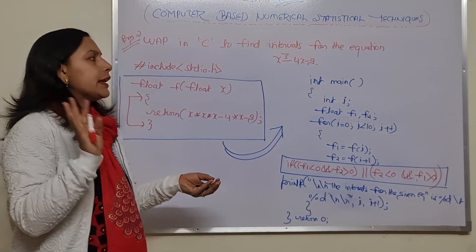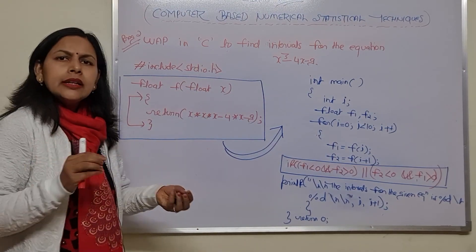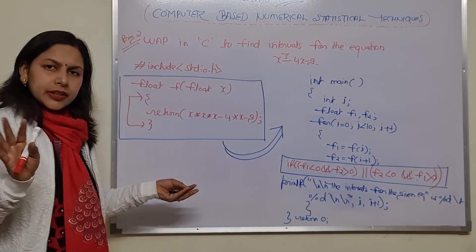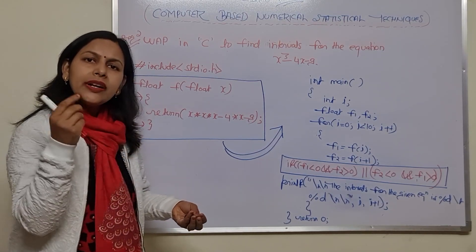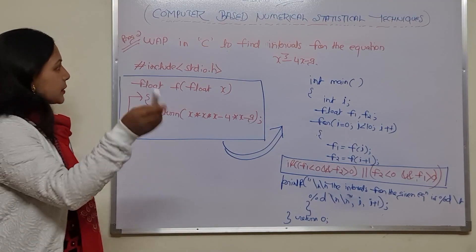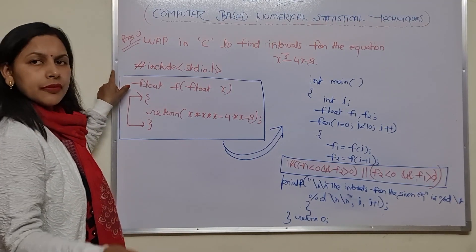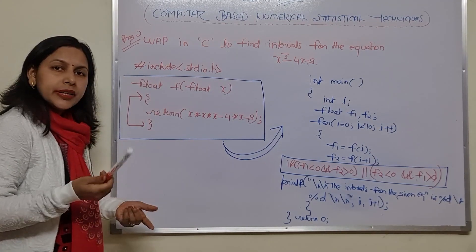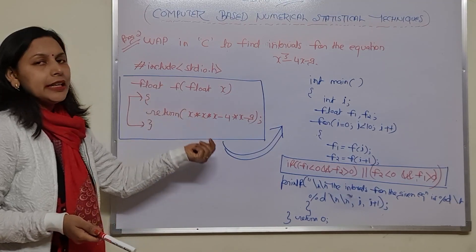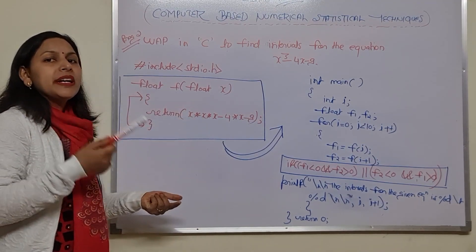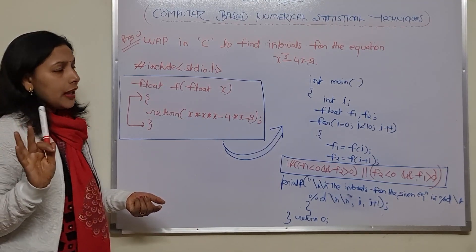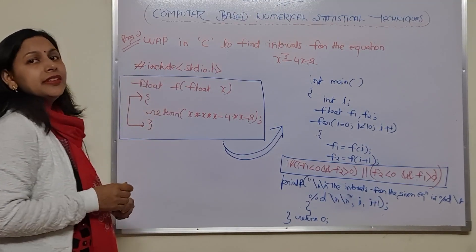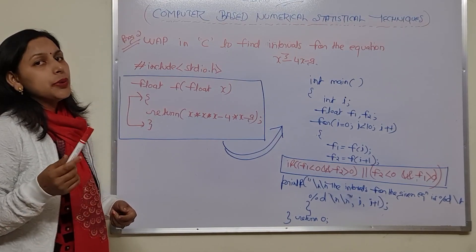Once you create the C program, then with the help of a computer you could find the number of intervals even in the case of floating point numbers. Now in case of a C program, first of all we would include one standard input-output header file. Because we need the functions printf and scanf — that is why we are including one header file, that is stdio.h.